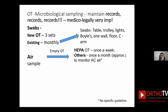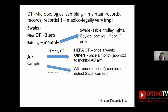Air sampling is usually done in an empty theater with the ventilation equipment running. For a HEPA filter OT, the suggested frequency is once a week in an empty theater — done first thing in the morning by exposing the culture plate or using an air sampler machine. In non-ventilated theaters the suggested frequency is once a month, because split ACs cannot be cleaned internally frequently and the air coming out will not be sterile. If the AC is not being cleaned regularly, increase the frequency of air monitoring.